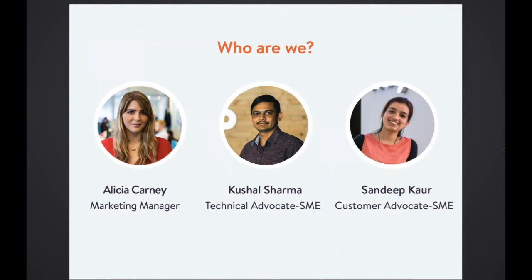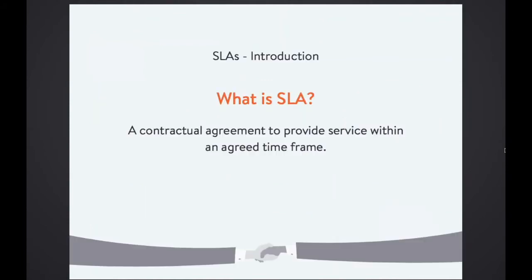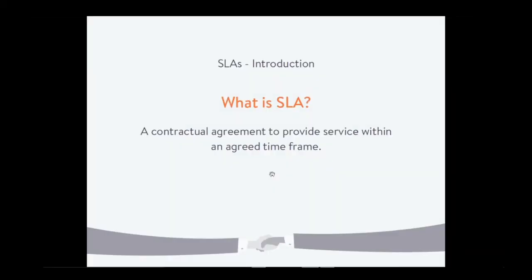Today we are going to talk about SLAs. What is an SLA? An SLA is basically a contract to provide service within an agreed time frame. Different industries have different terminology to explain SLAs — some call it customer response metrics. Usually when someone says the word SLA, it is linked with the service industry, but overall it is spread across all industries. Even in retail, the time frame you give your customers to deliver a product to them is a kind of SLA.